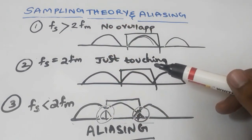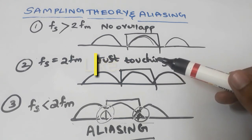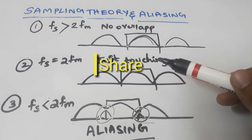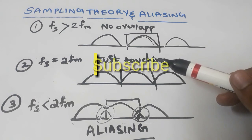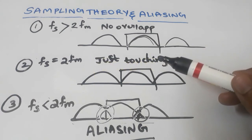This is about sampling theory in digital communication and the aliasing effect. If you like this content, please like, share, and subscribe to our channel. Thank you.